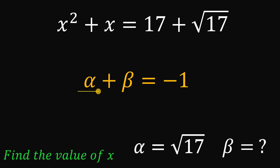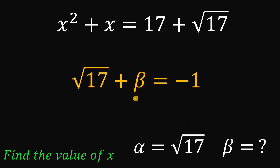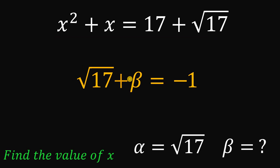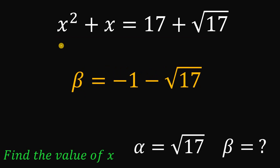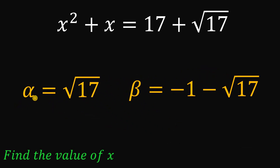We know the value of alpha is square root of 17. To solve for beta, the other root, we subtract square root of 17 from both sides. We get that beta equals negative 1 minus square root of 17. So our two values of x are alpha equals square root of 17 and beta equals negative 1 minus square root of 17.